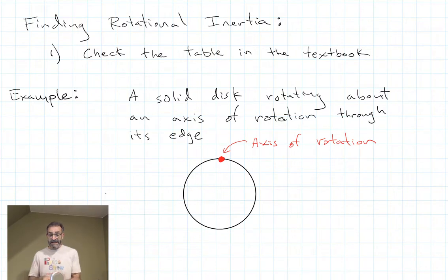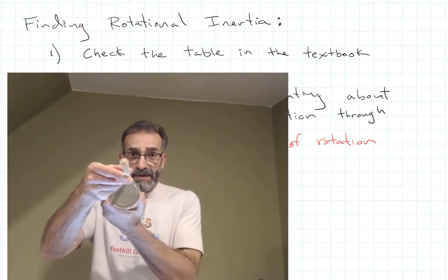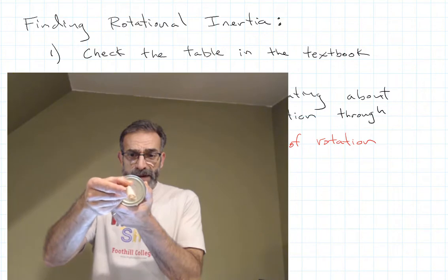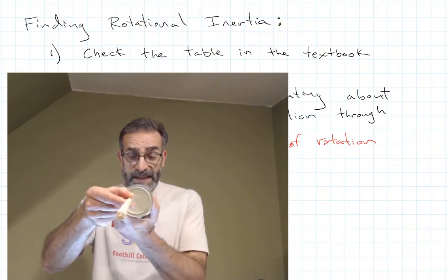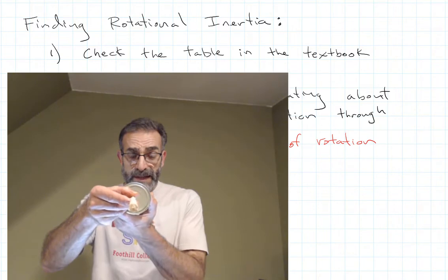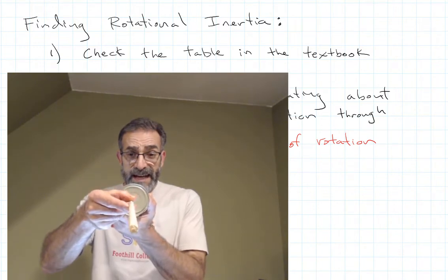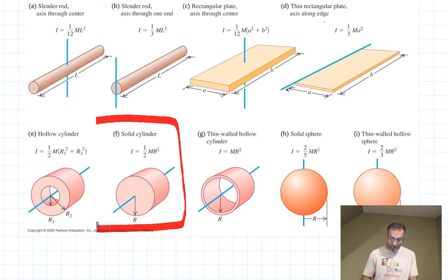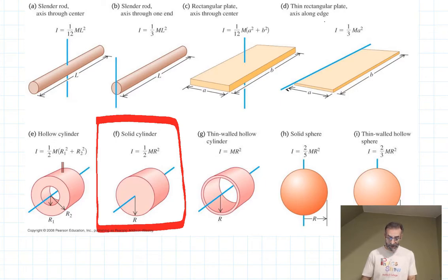In this case, the answer is yes, because our disc is rotating about an axis at the rim, but there's an axis parallel to this one that goes through the center of mass of the disc — and we can look that up in the table. So step two is: see if you can use the table in conjunction with the parallel axis theorem to find I. We found the solid cylinder rotating about its center point: one-half M R squared.